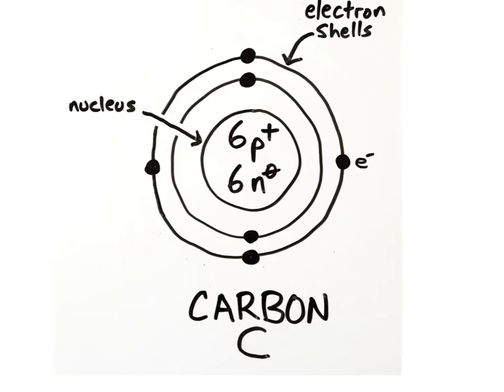For example, carbon has an atomic number of six because it has six protons in its nucleus. And zinc has an atomic number of 30 because it has 30 protons in its nucleus.